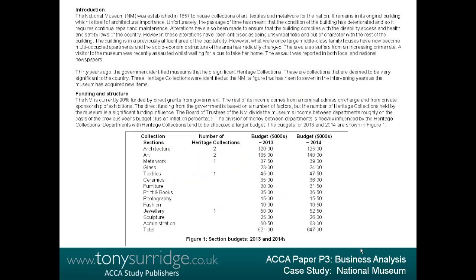Introduction. The National Museum was established in 1857 to house collections of art, textiles, and metalware for the nation. It remains in its original building, which is itself of architectural importance. Unfortunately, the passage of time has meant that the condition of the building has deteriorated and so it requires continual repair and maintenance. Alterations have also been made to ensure that the building complies with disability access and health and safety laws. I think this is either an ecological problem — such as energy inefficiency — or a legal problem relating to health and safety legislation. I consider it more of an ecological problem, so I have colored this part yellow.